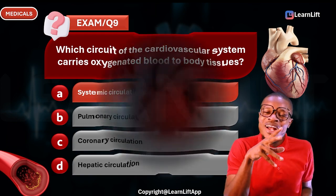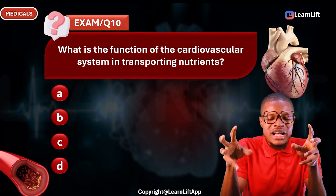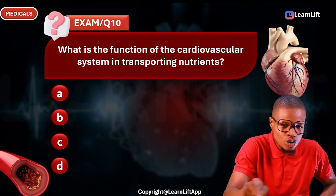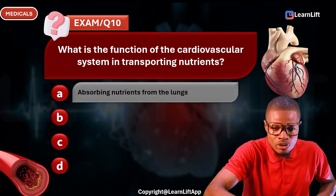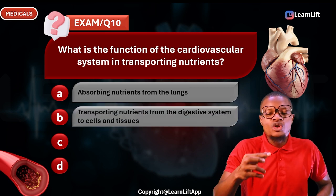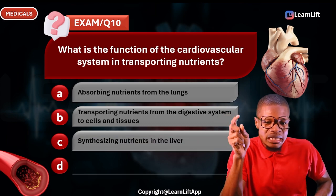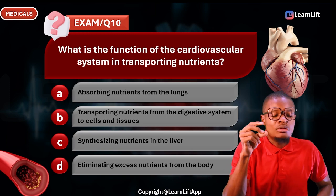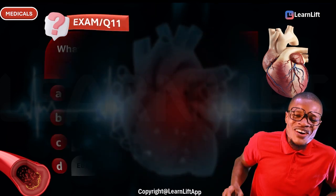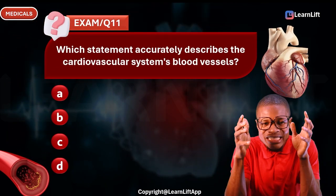Question ten: What is the function of the cardiovascular system in transporting nutrients? Option A: absorb nutrients from the lungs. Option B: transport nutrients from the digestive system to cells and tissues. Option C: synthesize nutrients in the liver. Option D: eliminate excess nutrients from the body. The correct answer is Option B — transport nutrients from the digestive system to cells and tissues.